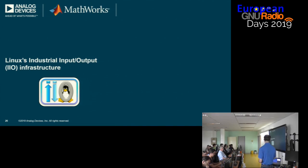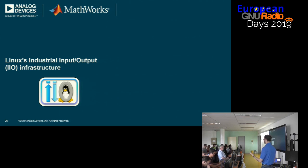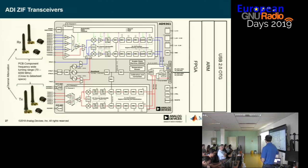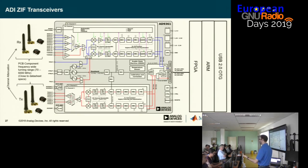Let's talk about the software stack we use to interface with these devices. We use a software layer called the Industrial I/O layer — this is not an ADI-specific thing, it's an infrastructure piece within the Linux kernel itself. We use it, our competitors use it, and many people across the industry use it for different purposes. This device has over a thousand registers that make it work — we say that's 999 ways to get it wrong. There's a lot of HDL and software that make the device work.